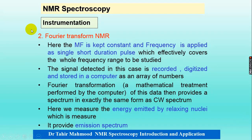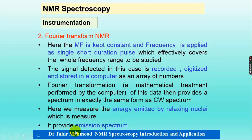The second one is Fourier transform NMR. In Fourier transform NMR, we keep the magnetic field constant and frequency is varied in short duration pulses, which effectively cover the whole frequency range to be studied. In Fourier transform, we get emission spectra, while in continuous wave, we obtain absorption spectra.